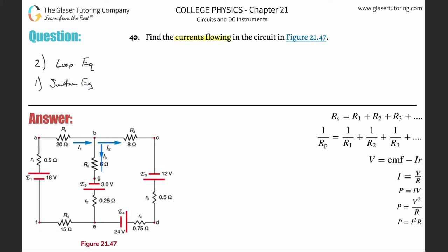I'm going to extend the arrows a little bit so we can follow along. This one is I3, this one is I2 moving in a clockwise direction, and I1 here is also moving in a clockwise direction. So choose two loops — it really doesn't matter which ones you pick.